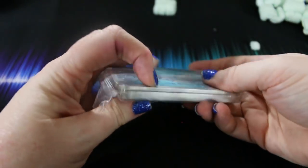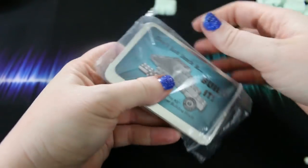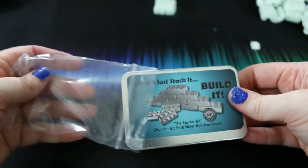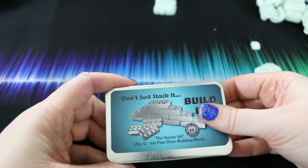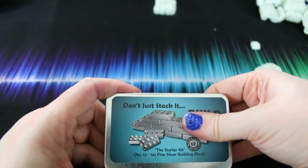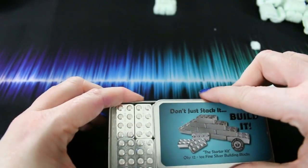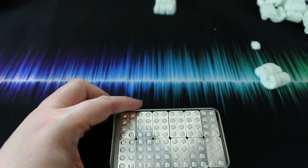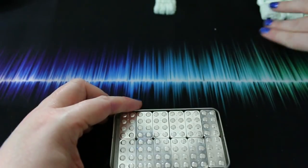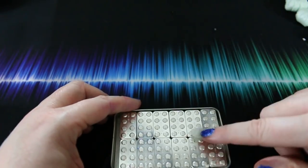And here we go. Upside down. But look. Get out of the bag. Silver Legos. So this comes from Monarch Precious Metals. You can buy each Lego individually. You can buy them in a 12 pack which is what I've done here.